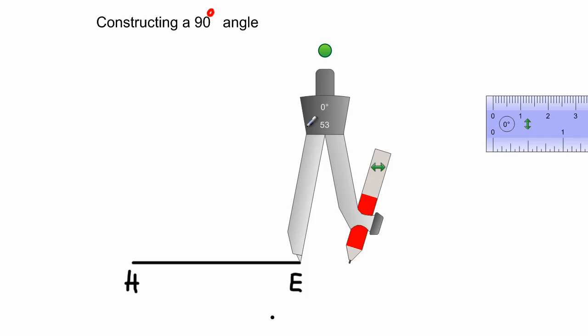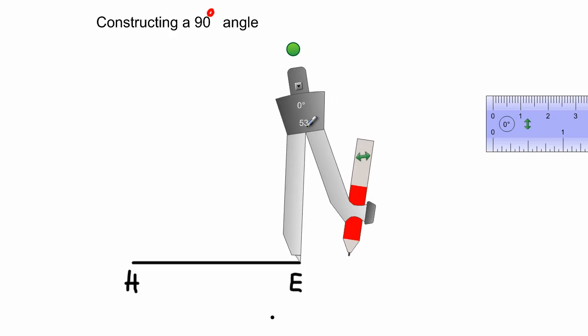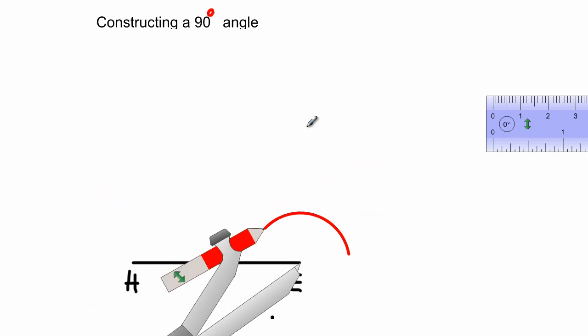I am going to swing an arc and I'm going to swing it from this side and I'm going to touch my line segment H E. So right there is good enough for me, so I've touched the line segment H E.